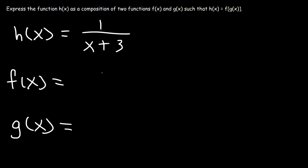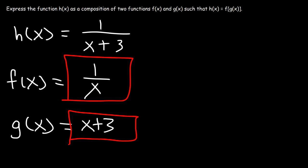The outside function is going to be 1 over x. The inside function is simply x plus 3. Because if you replace x with x plus 3, you're going to get 1 over x plus 3. And that's pretty straightforward. These problems are not too bad.